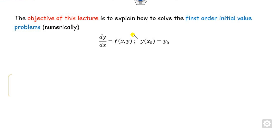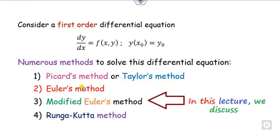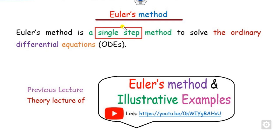The objective of this lecture is to learn how we can solve a first order differential equation of the form dy/dx with one initial condition. There are numerous methods available to solve such first order differential equations, including the Picard method, Euler method, and so on. In this lecture we will focus on the modified Euler method. The previous lecture covered the basic Euler method, which you can find on my YouTube channel.